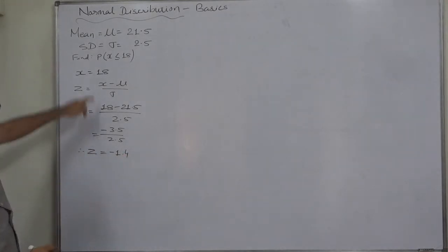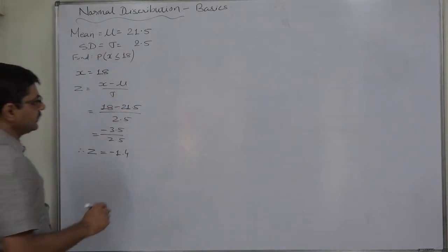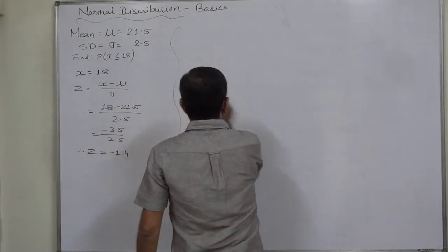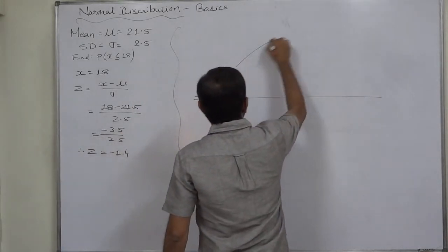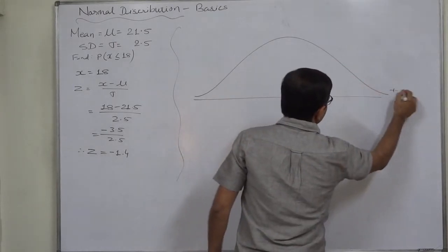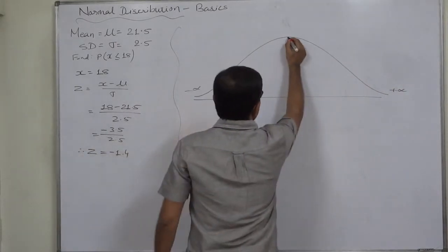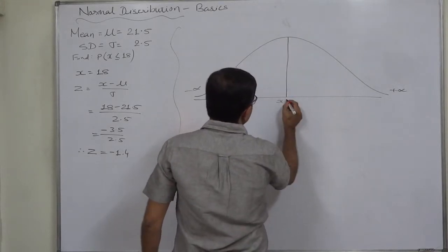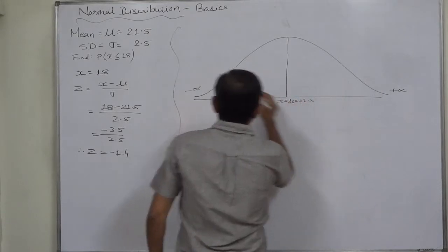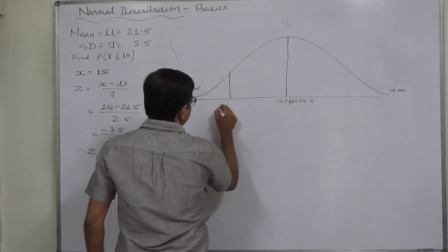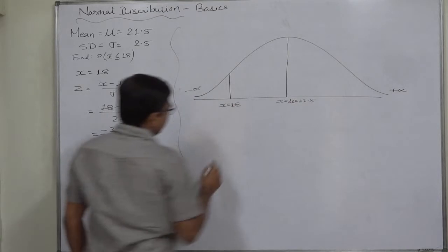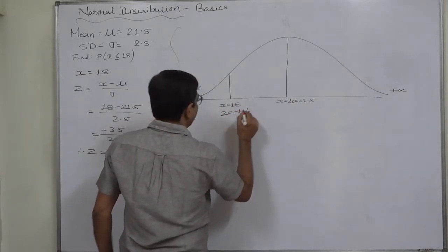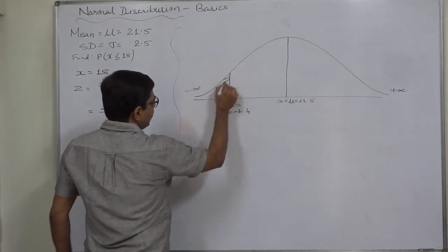Z is negative because x is less than mean. That means x falls in the left hand side region of the normal curve. Let us draw the sketch. X takes value exactly equivalent to mean, that is exactly in the center of the curve, and x takes value 18 somewhere here. Z is minus 1.4, x less than or equal to 18.